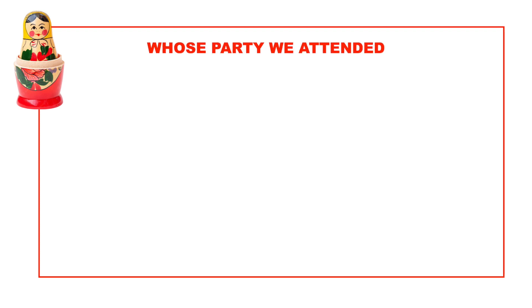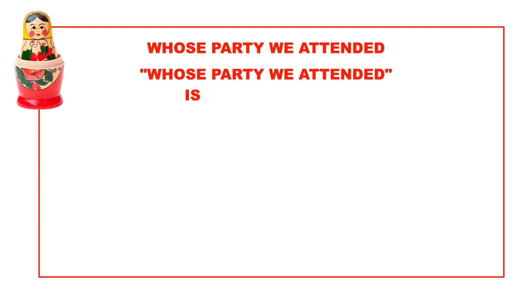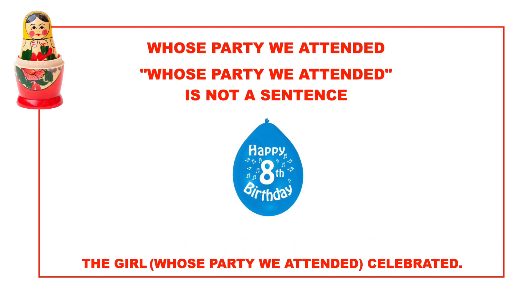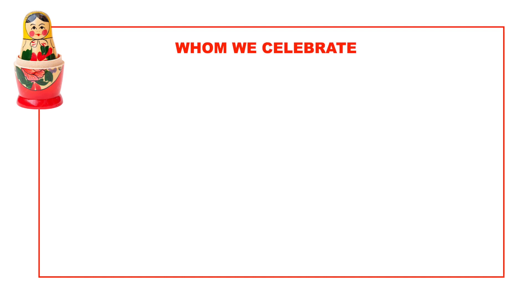The words whose party we attended do not contain a fact and are not a sentence. If you position the words whose party we attended after a noun in an existing sentence, these words create an adjective clause that describes the noun girl. Which girl? The girl whose party we attended.